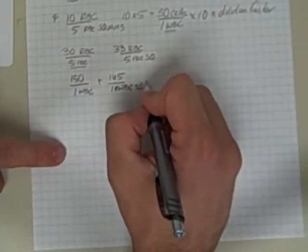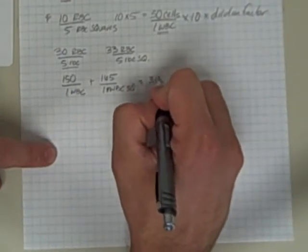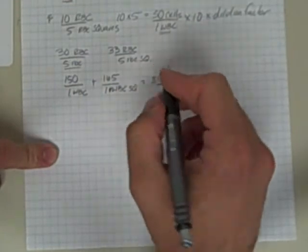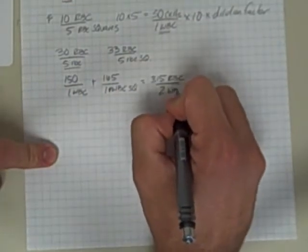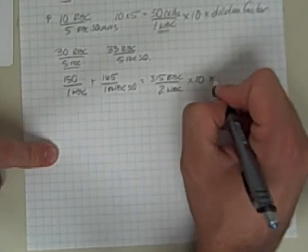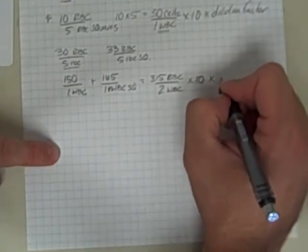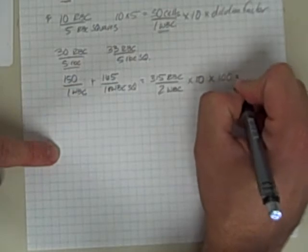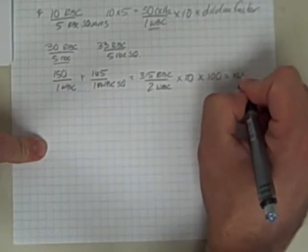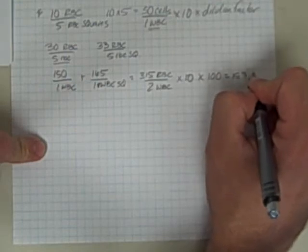And so now I can just do my math. So that would say I've got 315 red blood cells in two white blood cell squares, one from each side, times 10 every single time, times my dilution, which in this example was a one to one hundred. And if I crunch those numbers out, I get 157,500.